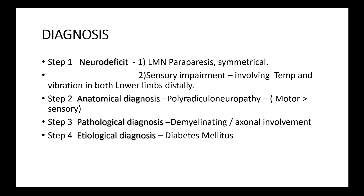HbA1c showed well-controlled diabetes. Nerve conduction study done on April 5th showed both lower limb sensory and motor axonopathy. Both peroneal nerve motor responses were absent, left tibial nerve motor showed reduced amplitude and conduction velocity, and right tibial nerve was normal. What we clinically described as sensory motor radiculoneuropathy is confirmed by nerve conduction, and the mononeuropathy is also confirmed — lateral popliteal involvement is there. But it is more of axonopathy, making chances of total functional recovery somewhat limited.